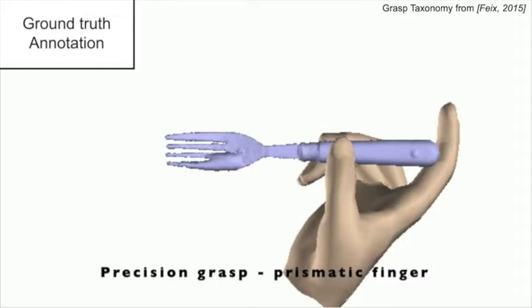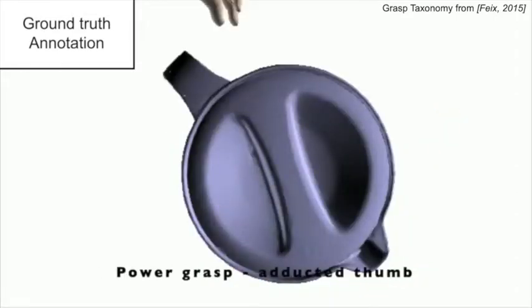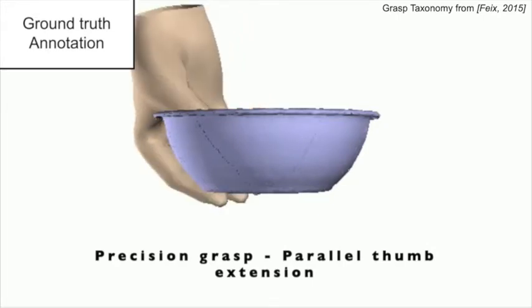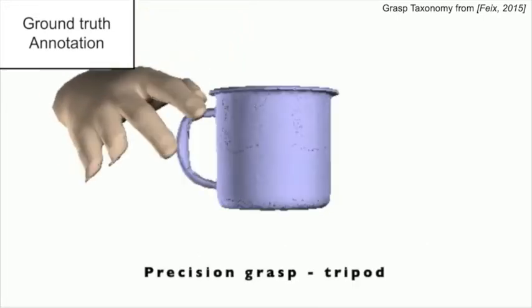So, we created the YCB affordance dataset, with manually annotated grasps for all objects on the YCB object set. These are common objects that are important for robotic grasping and manipulation tasks.